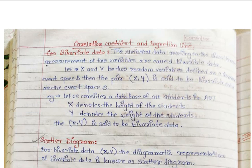What is bivariate data? Suppose we consider two random variables measuring two different things. Say, we take one class of students as our population and want to measure two different things: the height of the students, taken as variable X, and the weight of the students, taken as variable Y. These create random variables whose values are sample points, just as we learned in probability.